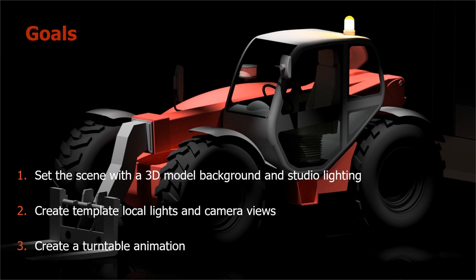I want to show you how to create local lights and camera views onto your model so you can set this as a default template. So if you're a company that makes a bunch of forklifts and they're all around the same size, you can start setting your lights up to shine down the same location, set different camera angles — a front view, an isometric view, side view, top, bottom, whatever you like. So you don't have to keep resetting these settings from scratch. Spend a couple of hours to set your settings one time and you don't have to go back and do it again. I'm going to show you how to create that template today.